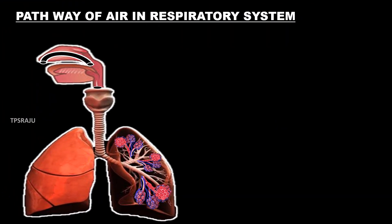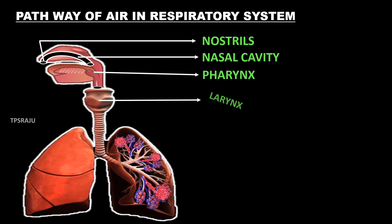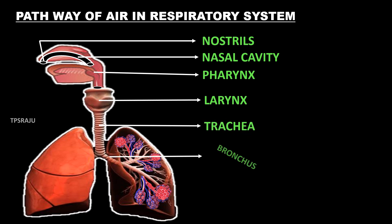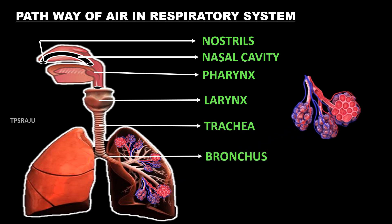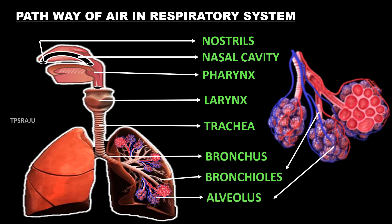The pathway of the Respiratory System is: Nostrils, Nasal cavity, Pharynx, Larynx, Trachea, Bronchus, Bronchioles and Alveolus.